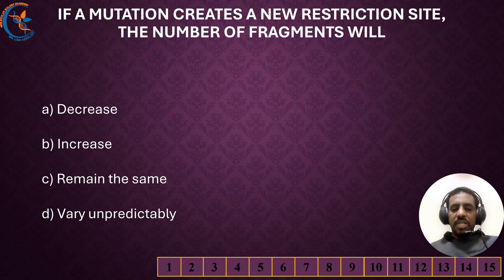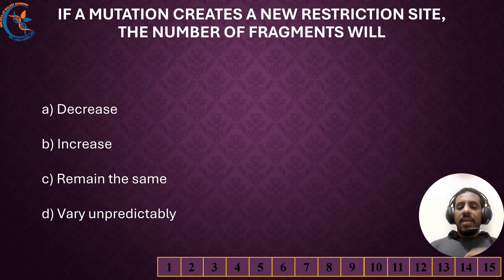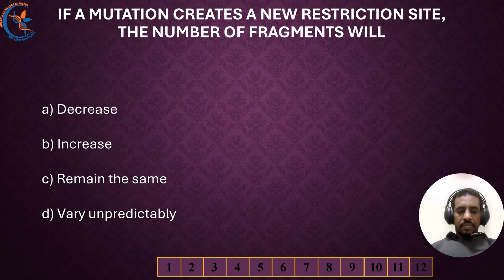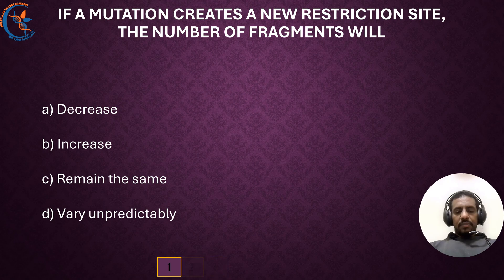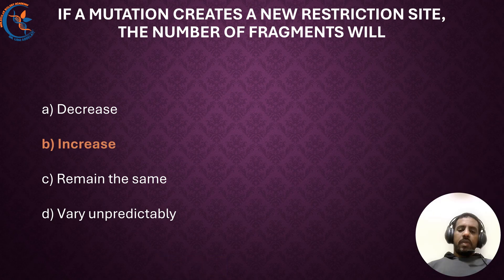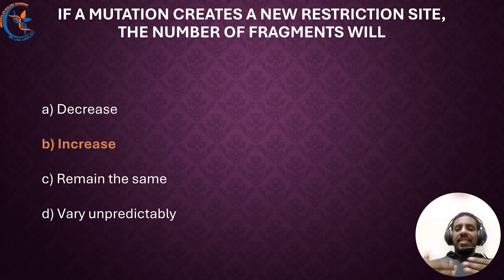If a mutation creates a new restriction site, the number of fragments will increase. Additional restriction sites result in more fragments.